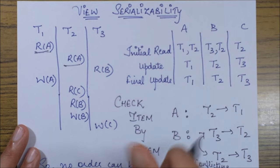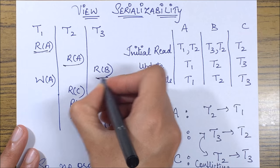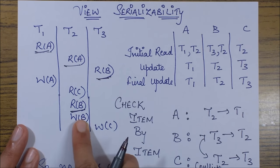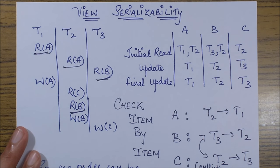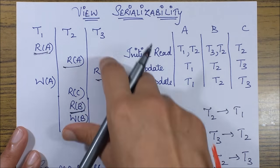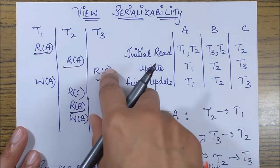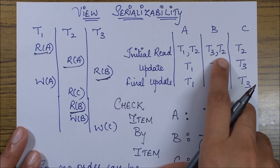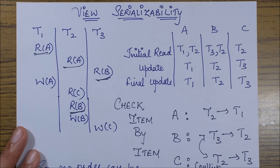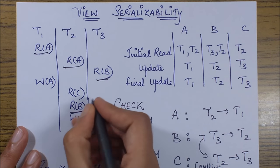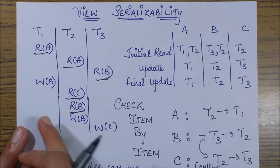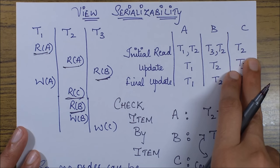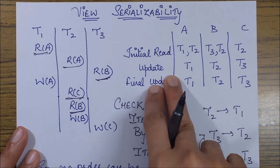For data item B, we have two read operations — Read B in T3 and Read B in T2 — and since there is no Write B before either of them, both are initial reads: T3 and T2. For data item C, there is only one read operation and no Write C before it, so it is an initial read belonging to T2.